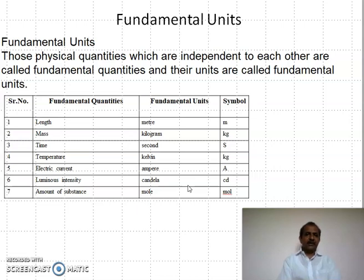Here there are seven fundamental physical quantities: length, mass, time, thermodynamic temperature, electric current, luminous intensity, and amount of substance. These seven are called fundamental physical quantities. They do not depend on other quantities. The first quantity is length. Its unit is meter.